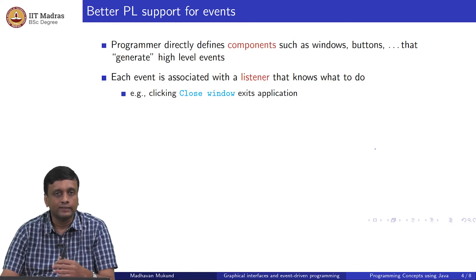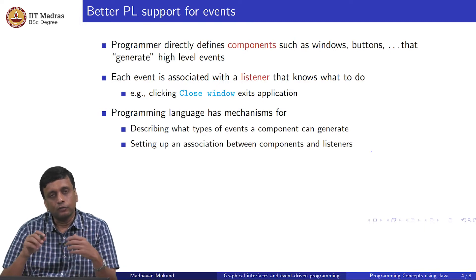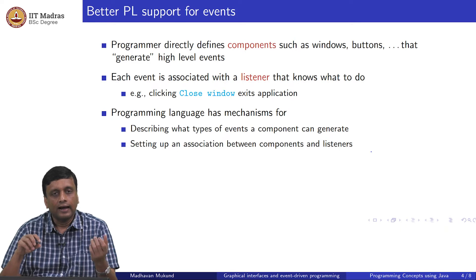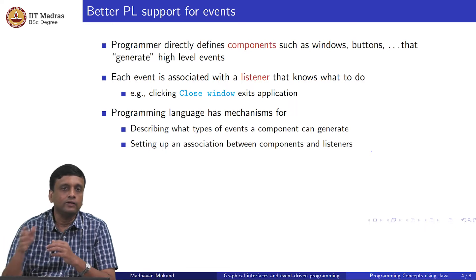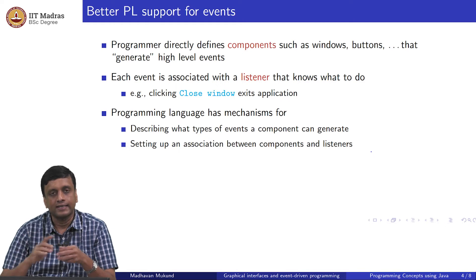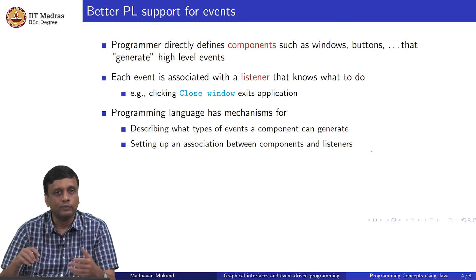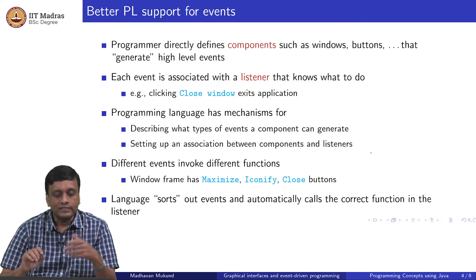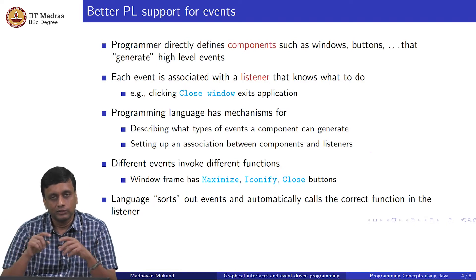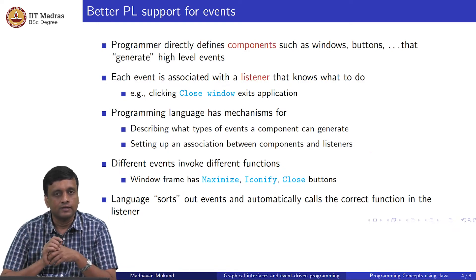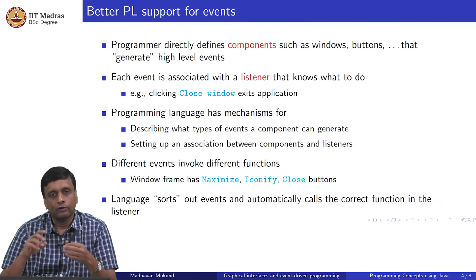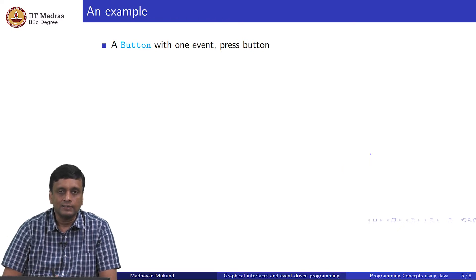We would like to program at that level — to say there are these three buttons, and if you detect a click on this type of button do this, on that type of button do that. The programming language should be able to tell you what kinds of events a window can generate, and then set up a connection saying if this type of event happens, perform this kind of function. This is what is called a listener — somebody is listening, waiting for things to happen, and when something happens they react and respond. These events differ from component to component; a typical application window could have maximize, minimize, and close events.